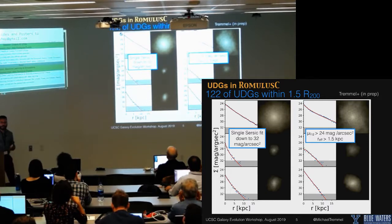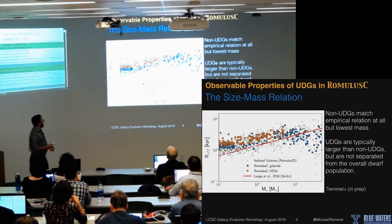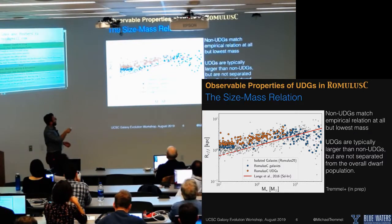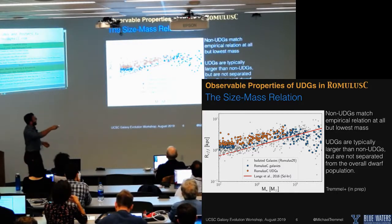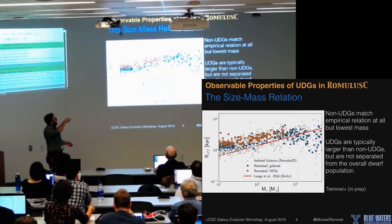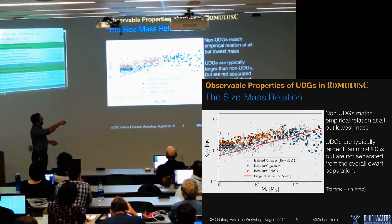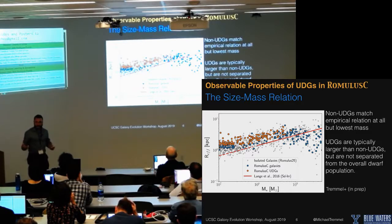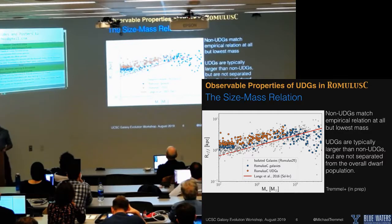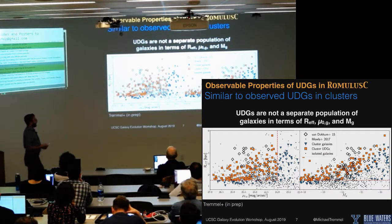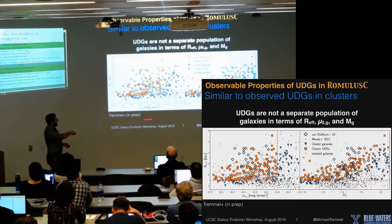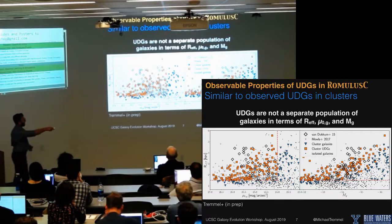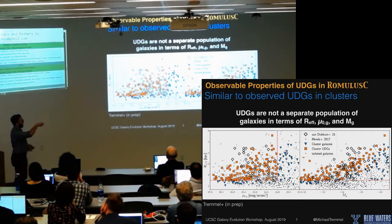We ask whether these galaxies look different than the average dwarf galaxy population. In the size-mass relation, gray points show isolated dwarf galaxies from Romulus 25, which match quite nicely except at the lowest mass scales. In blue are cluster non-UDGs, and in orange are the ultra-diffuse galaxies. The UDGs follow the same general relation — they just have a higher radius at a given stellar mass. They're part of the same galaxy population, nothing particularly special.